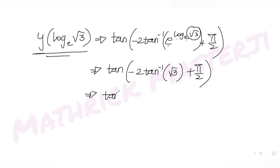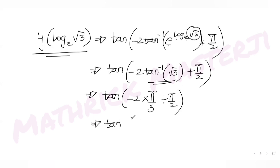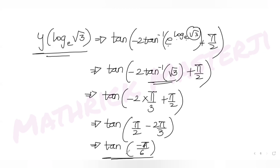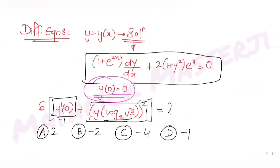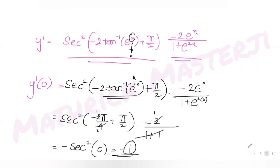Since tan⁻¹(√3) = π/3, we get tan(-2π/3 + π/2) = tan(3π/6 - 4π/6) = tan(-π/6). Since tan(-θ) = -tan(θ), this is -tan(π/6) = -1/√3. Squaring gives [y(log√3)]² = 1/3.